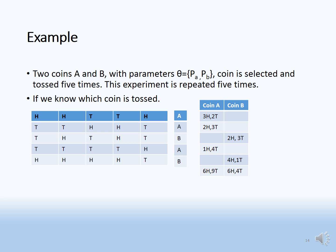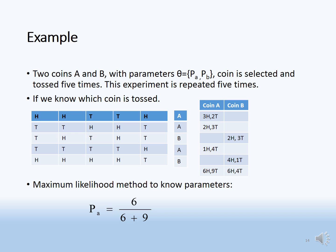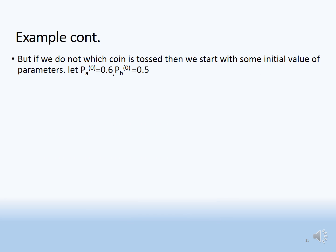Let's say we get a pattern of tossing each coin five times and we know which coin was used. We calculate the number of heads and tails for each coin: for coin A we get 3H 2T in the first row; we sum up heads and tails per coin column to get 6H 9T for coin A and 6H 4T for coin B. Using maximum likelihood: p_A = 6 / (6 + 9) and p_B = 6 / (6 + 4). But if we don't know which coin was used for each experiment, we use the EM method.